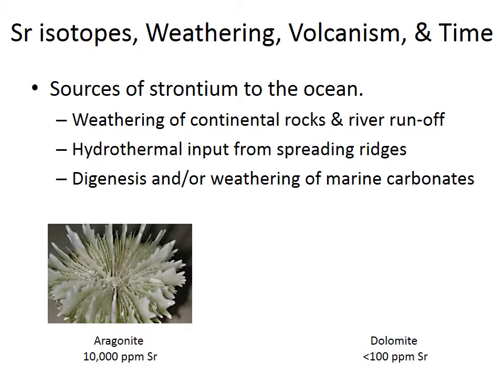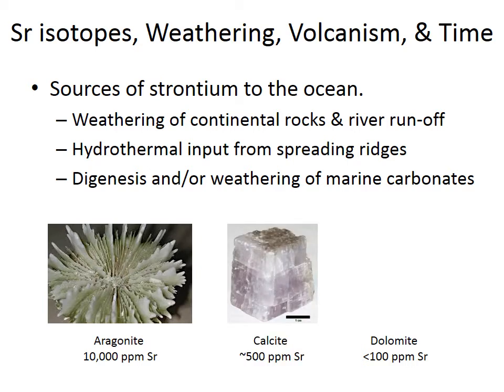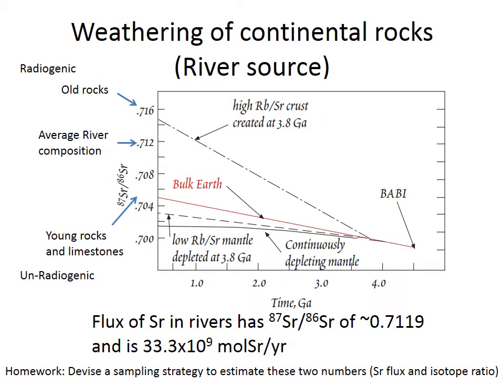For the diagenetic source: aragonite — like in this coral — has loads of strontium because the aragonite crystal structure readily incorporates strontium. Calcite, which is much more common in the geological record, has a much lower strontium concentration, as does dolomite. If we take an aragonitic coral and over time it converts to calcite through diagenesis, all that strontium is released into the pore water environment and ultimately goes back into the ocean.